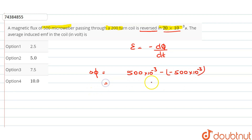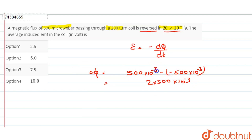How much will it be? 2 × 500 × 10⁻³. Sorry, micro — 10⁻⁶. Because we have a 200-turn coil, the total ΔΦ accounts for the number of turns.